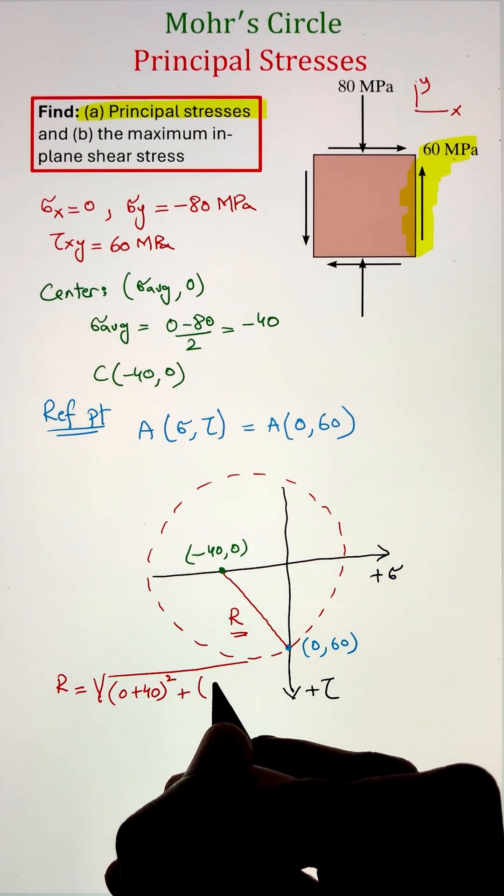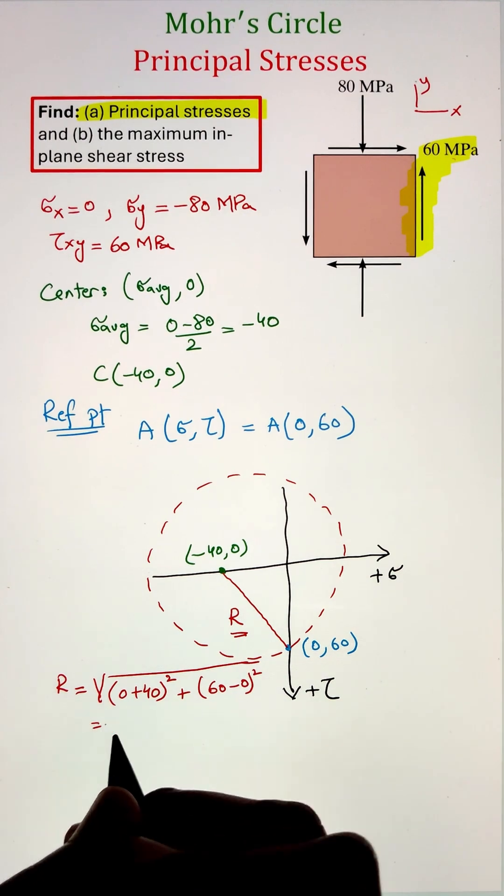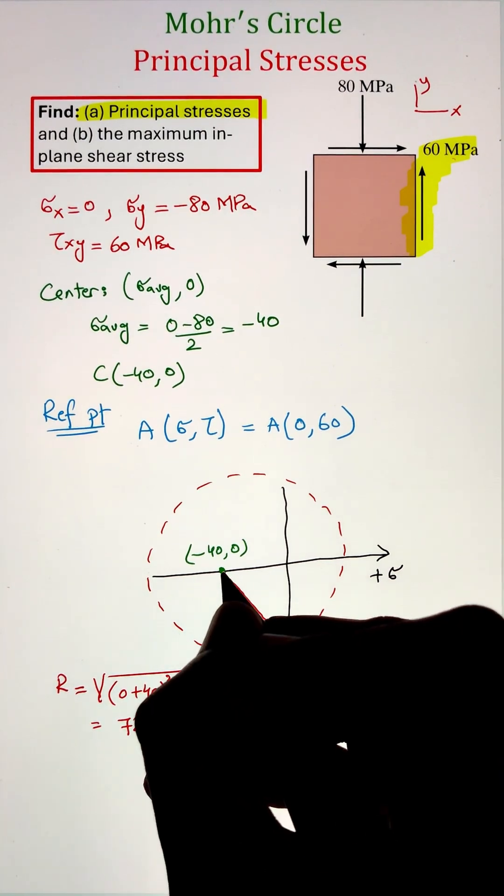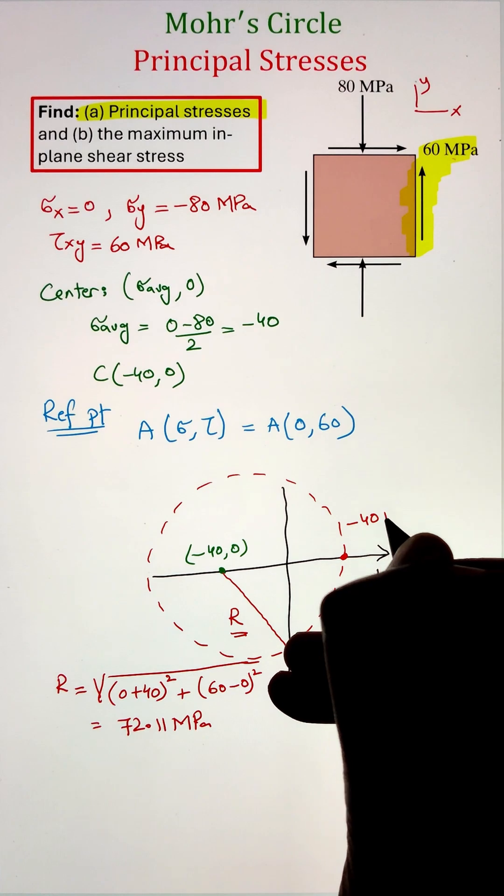Now the distance between the center point and point A is the radius of the circle and we can calculate it using our distance formula which is coming at 72.11 megapascal.